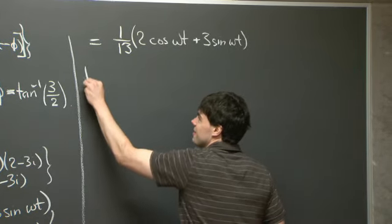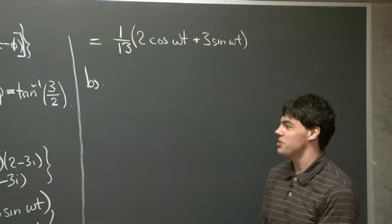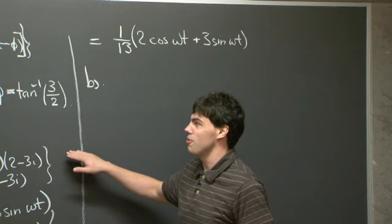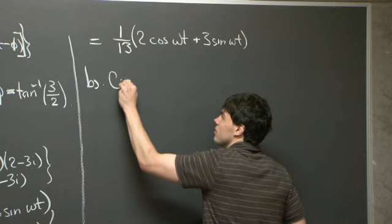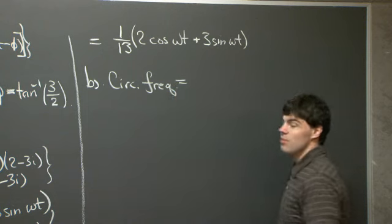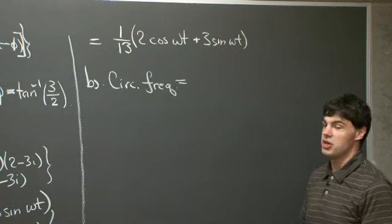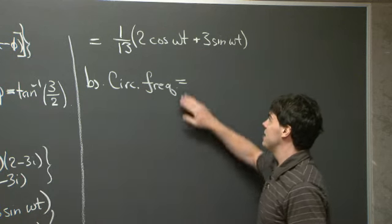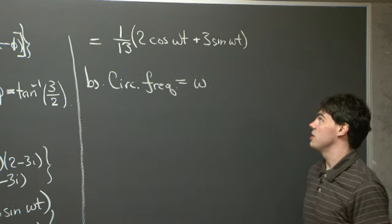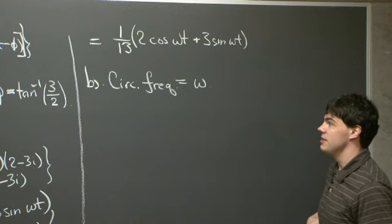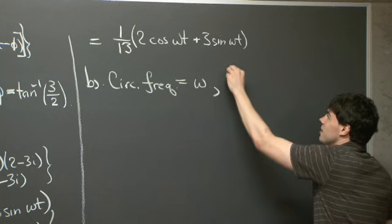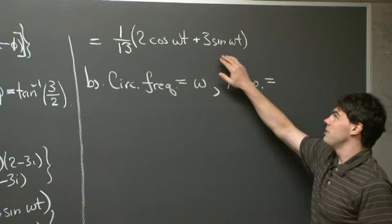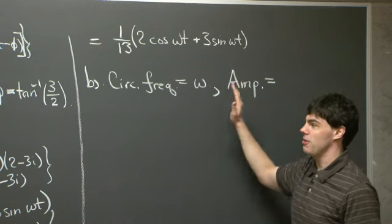This concludes part a. For part b, we're asked several questions about the sinusoidal function in its real form. The circular frequency is the frequency at which this function oscillates, and we can read it directly from either the polar or rectangular form — it is simply omega. Secondly, the amplitude is a little tricky to get from the rectangular form, but it is completely apparent from the polar form.